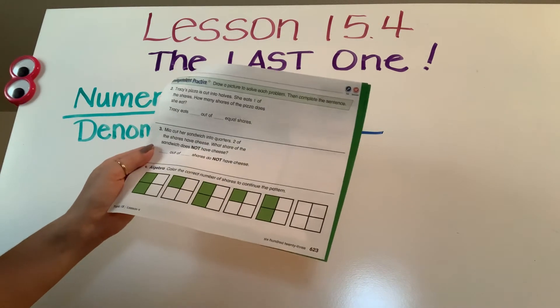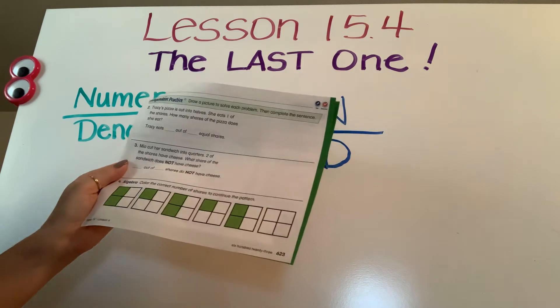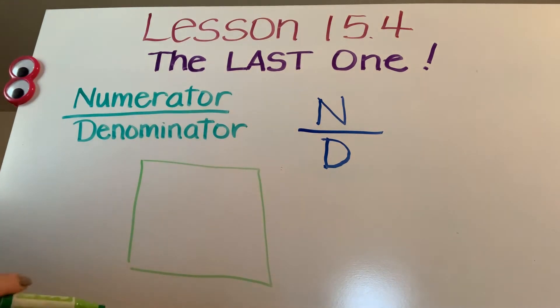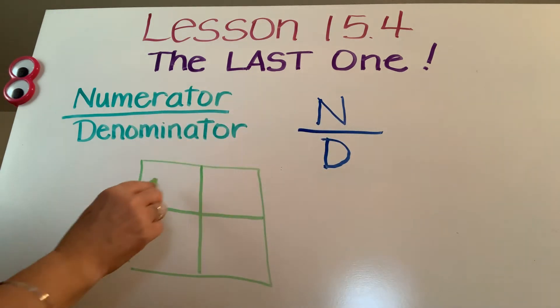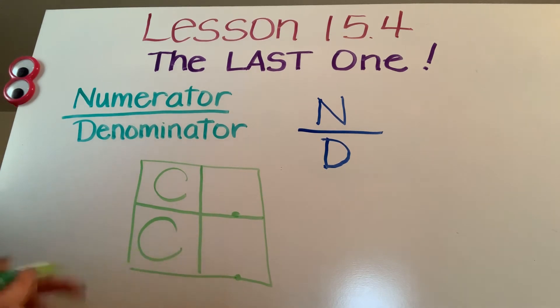All right, let's go down to number three. Maya cut her sandwich into quarters. Two of the shares have cheese. What share of the sandwich does not have cheese? The best thing to do is for you to draw a sandwich. It's really easy if you draw the picture. Now, it says she cuts her sandwich into quarters. What's the other word for quarter, Noelle? Good girl. Fourths. Fourths means I have cut my sandwich into how many pieces? Liza? Four. Good girl. Fourths. Four quarters. Four quarters. Here we go. So there are my four quarters. And let's look at the next part. Two of them have cheese. I'll put a big C. Two of them have cheese. Who does not have cheese? Well, this guy doesn't have cheese. This guy doesn't have cheese.